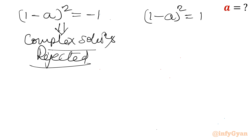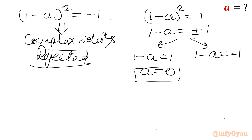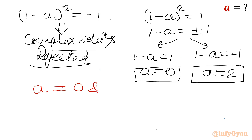From the second bracket, (1 − a)² = 1, so 1 − a = ±1. If 1 − a = 1, then a = 0. If 1 − a = −1, then a = 2. So we have two candidate real values: a = 0 and a = 2.